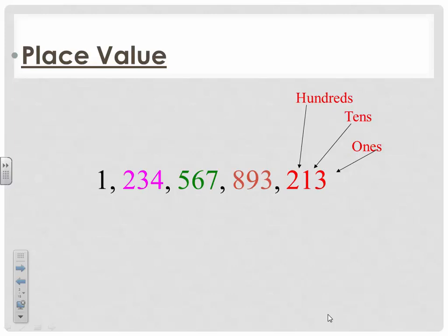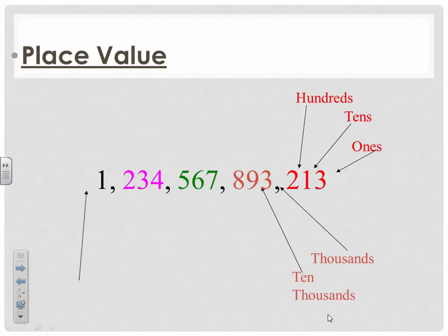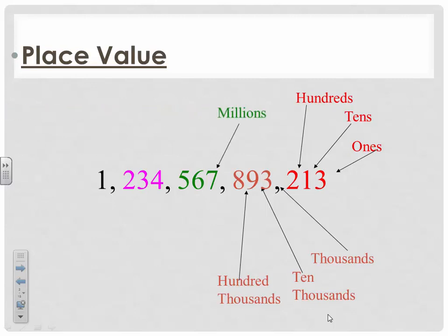The next three is in the thousands, and from here we're going to go thousands, ten thousands, hundred thousands — that should be familiar to you. Each group is going to go that same way, so we're going to name the group. The green group is the millions, so we're going to say millions, ten millions, hundred millions.